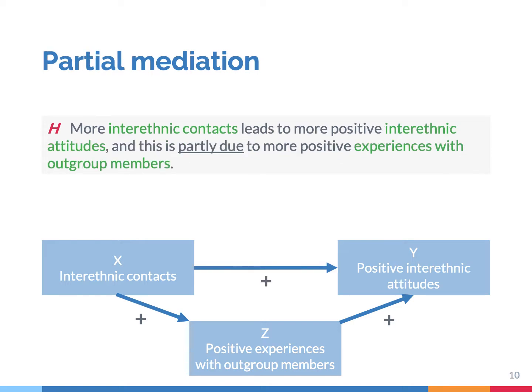Another possibility is that the impact of X on Y is partly accounted for by a third variable Z, such that X affects Y via Z, but also via other variables. This is called partial mediation. For example, it could be that interethnic contacts affect positive interethnic attitudes via positive experiences with outgroup members, but that such positive experiences do not tell the complete story. In other words, there remains an effect of interethnic contacts on positive interethnic attitudes which is not explained by positive intergroup experiences.